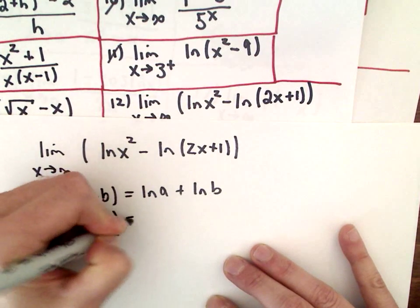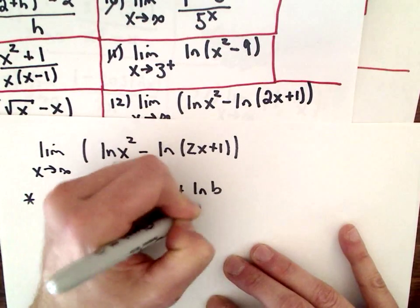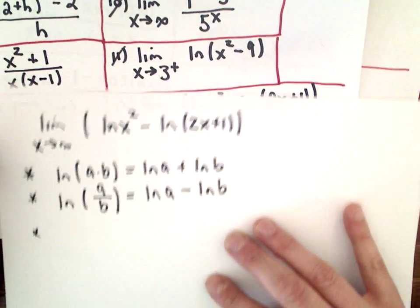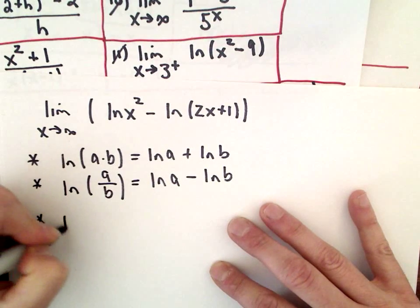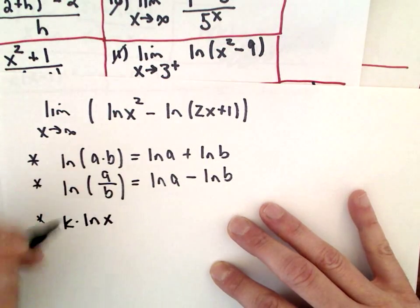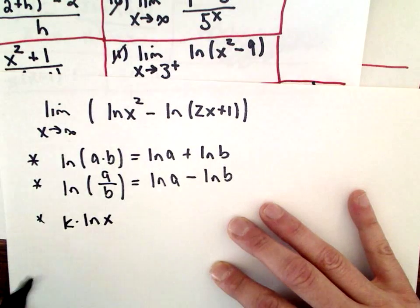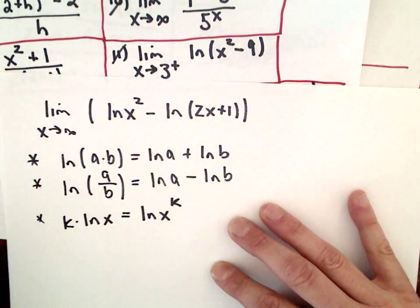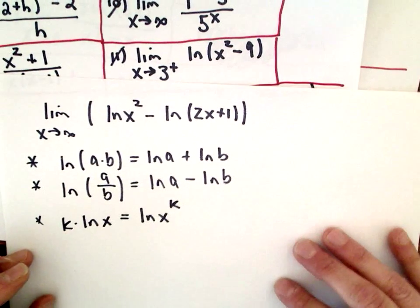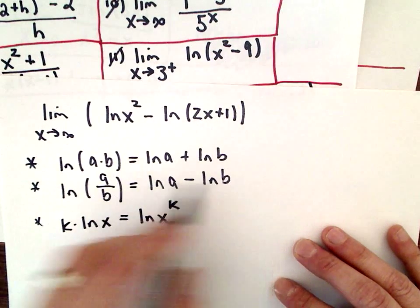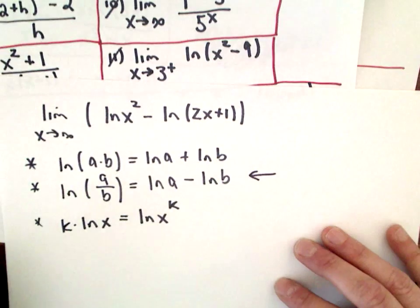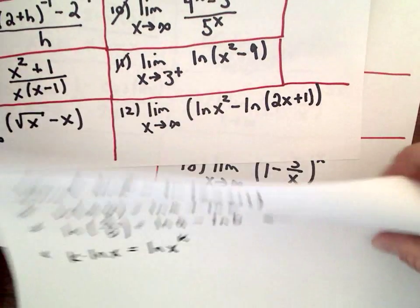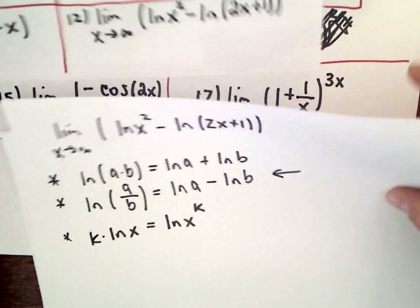If you have division, that becomes subtraction — which it does. And if you have a constant multiplied by the natural logarithm of x, that constant can go upstairs as an exponent. The only property we really need here is the second one, but there are the other three because you could easily tweak this problem and need to use the first one or the third one.